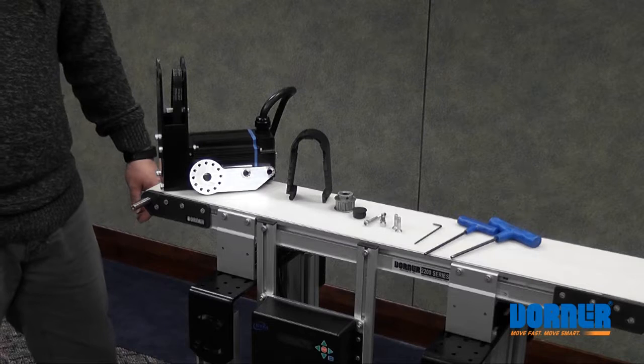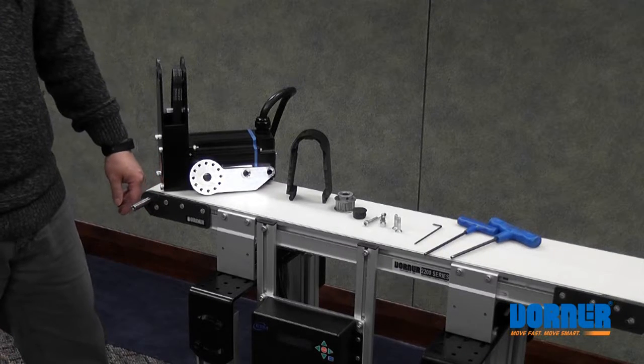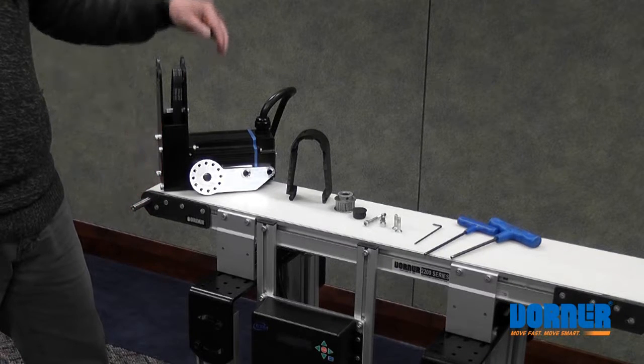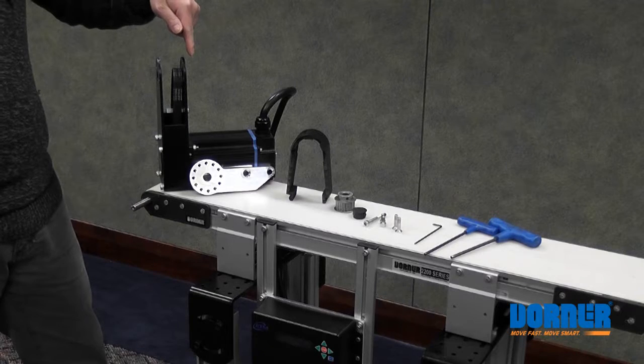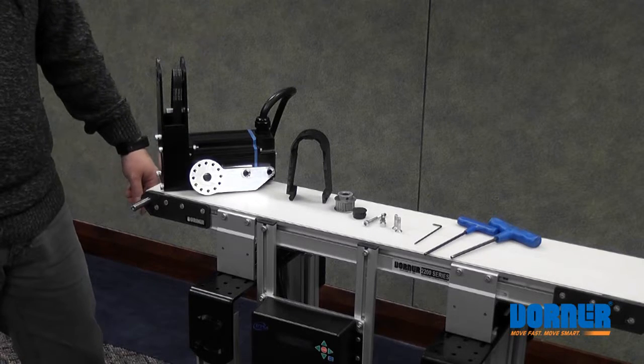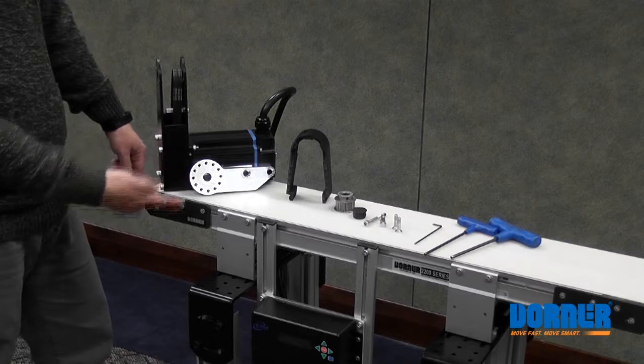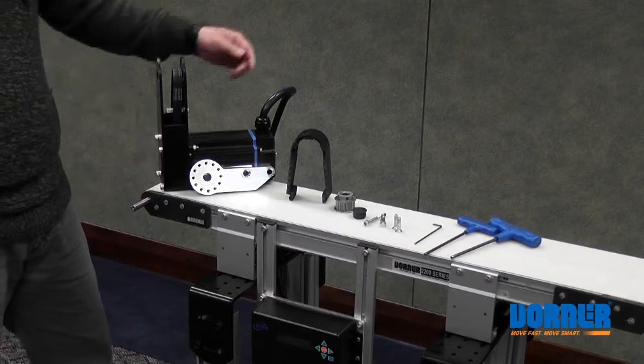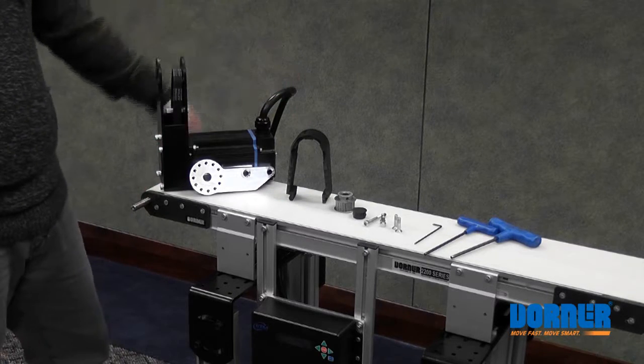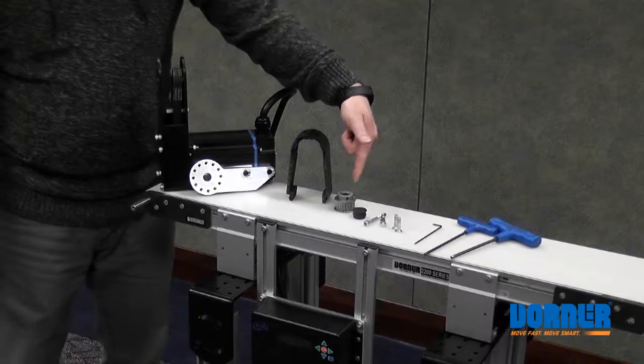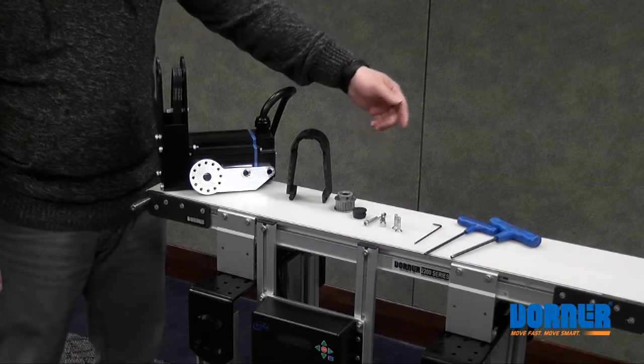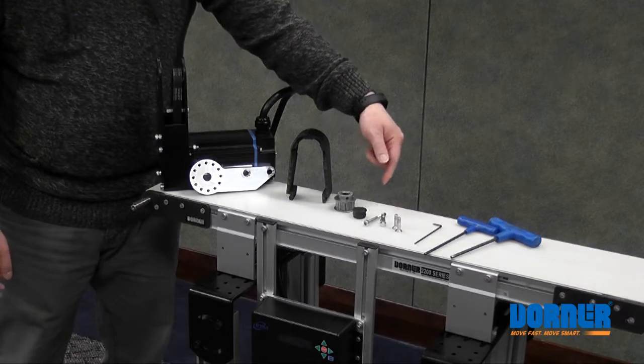Included in the kit is a partially assembled gear motor and mount package, the mount adapter plate, the upper guard assembly, a 22 tooth pulley, a plastic plug, and a variety of screws needed to mount the package.